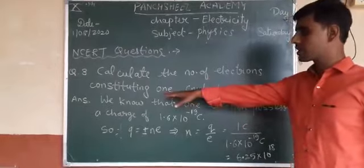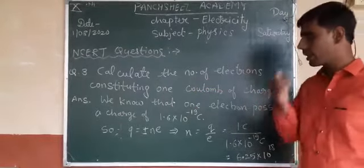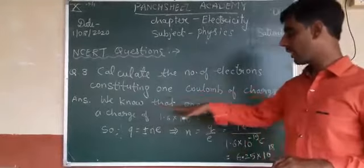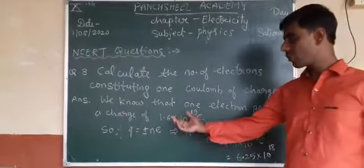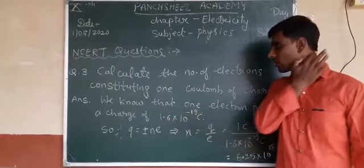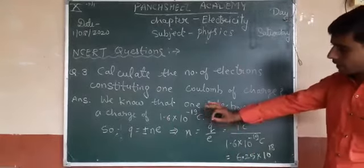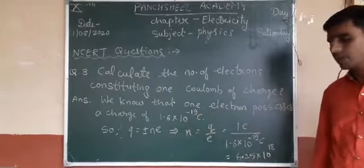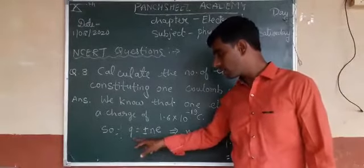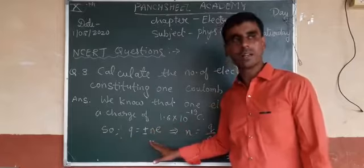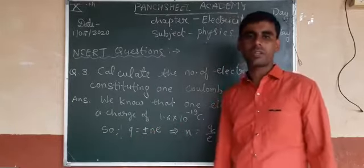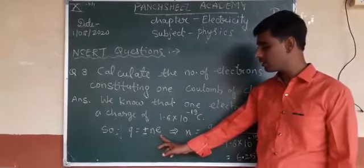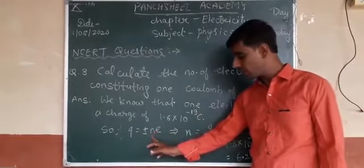Next question: calculate the number of electrons constituting one coulomb of charge. We know that one electron possesses a charge of 1.6 × 10⁻¹⁹ coulombs. The fundamental formula is Q = ±ne, where Q is total charge, n is the number of electrons, and e is the charge on one electron.